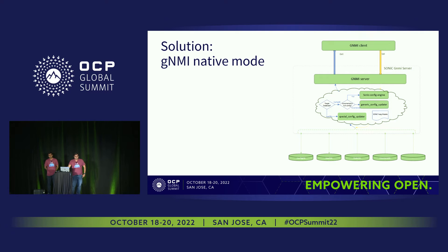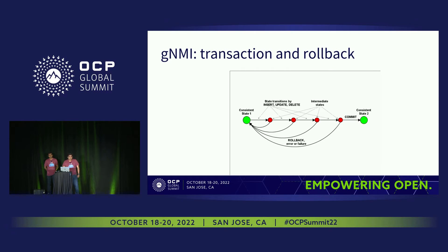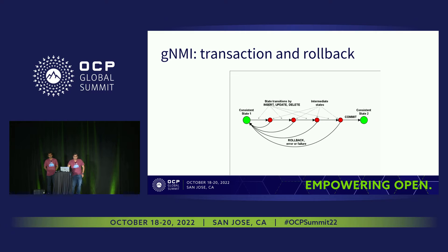There could be other use cases where we want to update, let's say, the application DB. In that case, we do an incremental update on the application DB. In the current GNMI solution, each request is treated as a transaction. After every operation — whether it's insert, delete, or update — on error, we roll back to the previous consistent state. Once all the operations are handled, the configuration is updated and we move to the next consistent state.